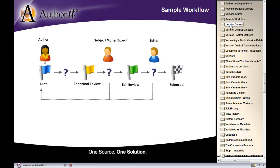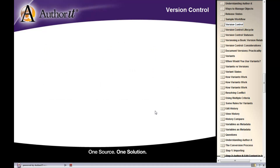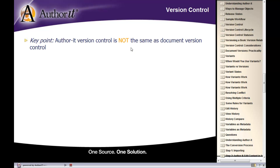Our next item is version control, which is another optional feature inside of Author-it. The wording 'version control' may be a little misleading — it's not document version control like you may think of for Perforce, Visual SourceSafe, Subversion, or something along those lines. It's Author-it's own version of version control, and we'll take a look at what that means now.